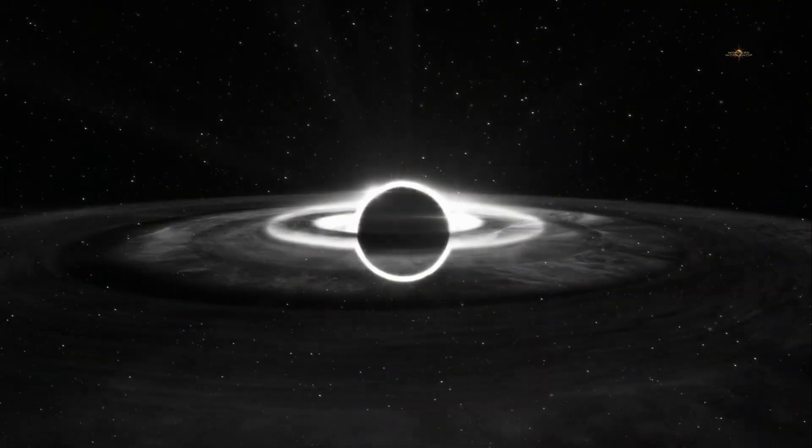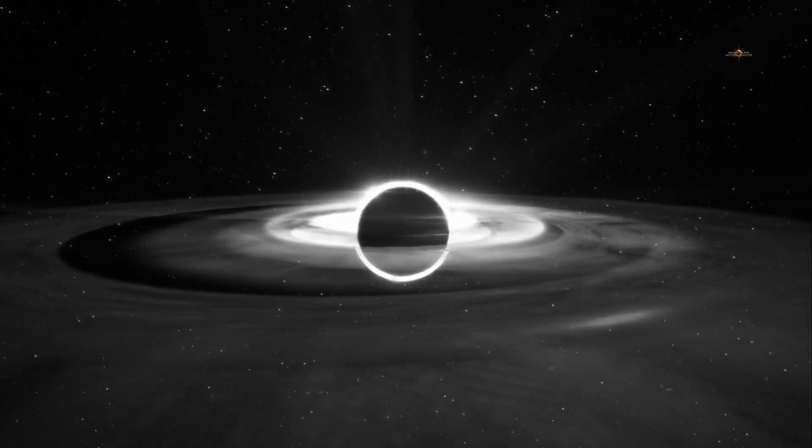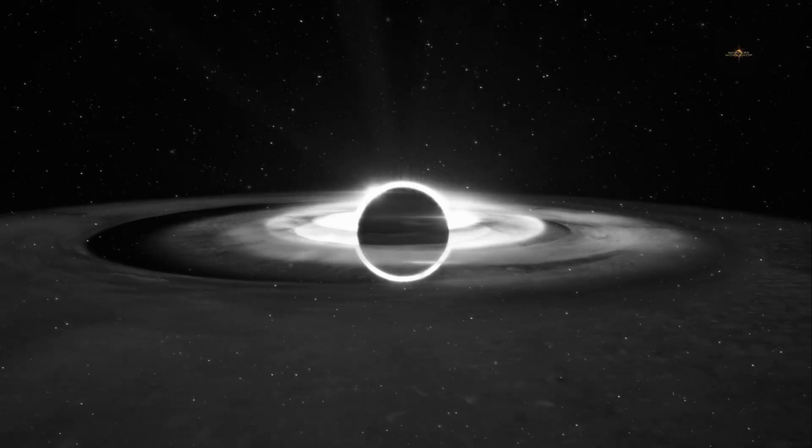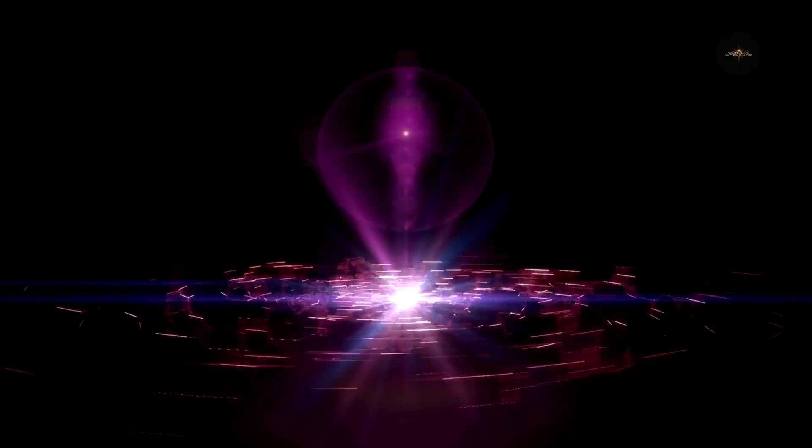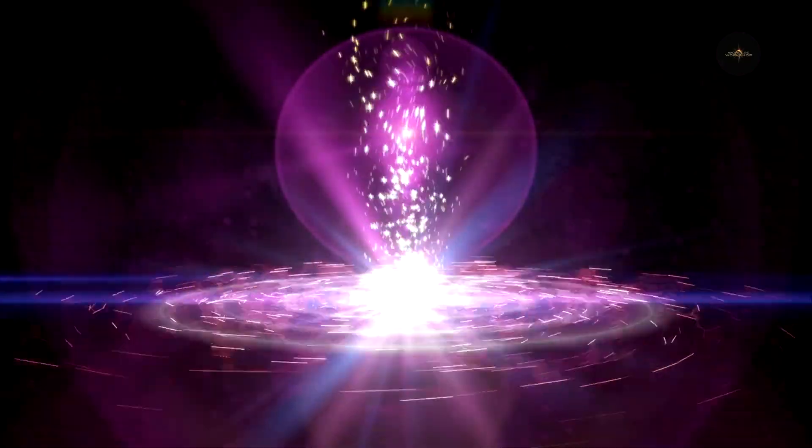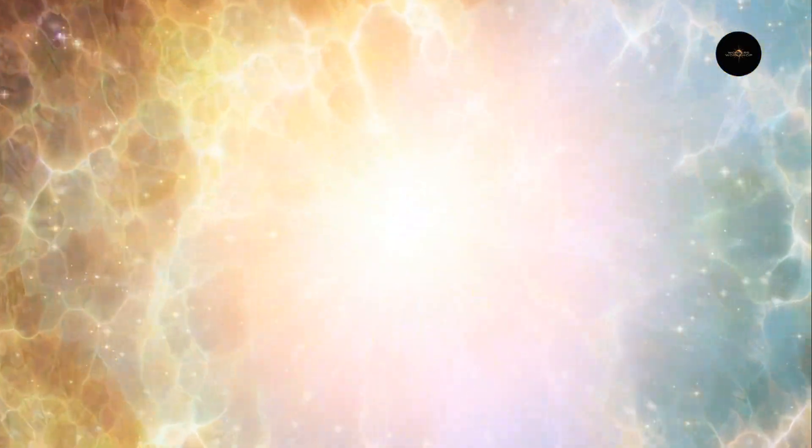Another example of an ultramassive black hole that is arousing scientific interest is Phoenix A, located at the center of the Phoenix Galaxy Cluster, about 5.7 billion light-years from Earth. This black hole is inside an old galaxy that, against all expectations, continues to form stars at a very high rate. In fact, Phoenix A is generating about 1,000 new stars per year, a rate of star formation that is extremely high for a galaxy of its age.